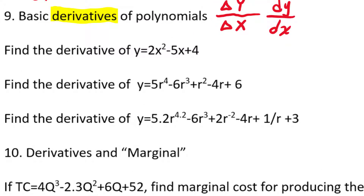If you're given a function like y = 2x² - 5x + 4, the rule is to take the exponent and multiply the coefficient by it. For the first term, we take the 2 and multiply it by the exponent 2, giving us 4x, and then subtract 1 from the exponent — 2 minus 1 is 1 — so we get 4x to the first, which we write as 4x.